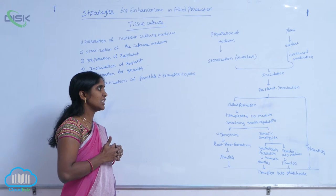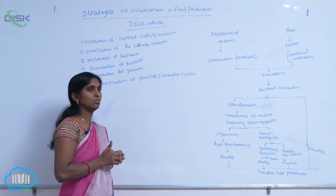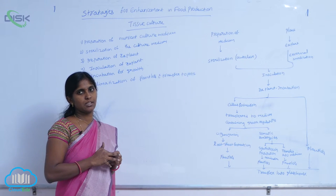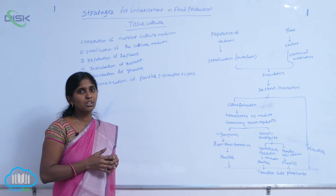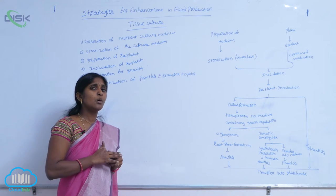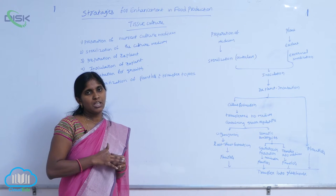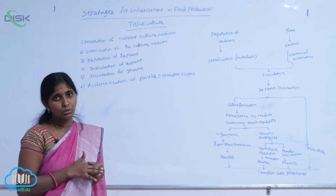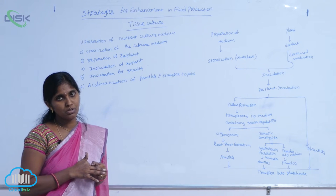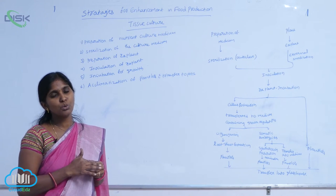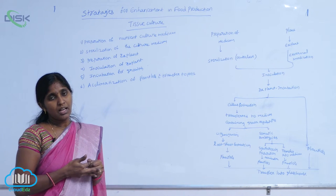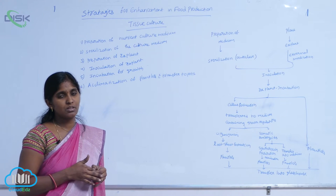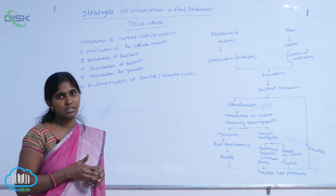For organogenesis, the callus is transferred into a medium containing growth regulators. The growth regulators used are auxins and cytokinins. If the percentage of auxins is more, that promotes formation of roots — that is called rhizogenesis. A high amount of cytokinins results in production of shoots — that is called caulogenesis.